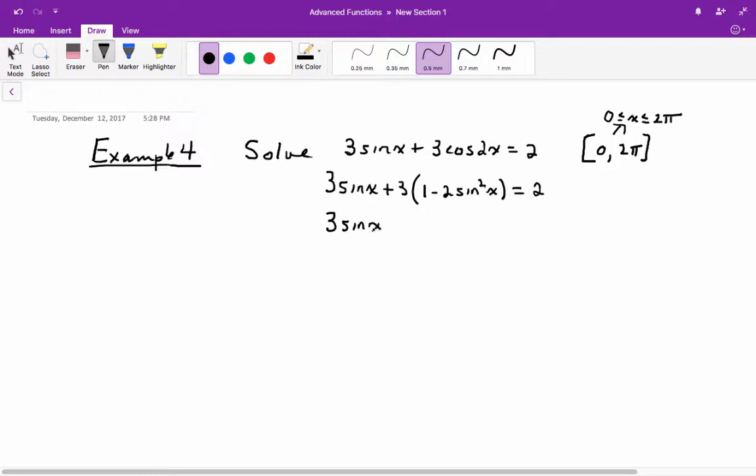Next line we're going to distribute. So we get 3 sine x minus 6 sine squared x equals 2. Rearrange everything. We're going to get negative 6 sine squared x plus 3 sine x.